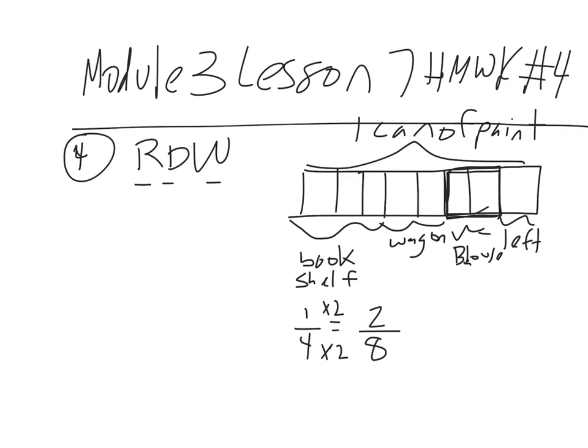So if the can of paint is one whole, we'll change that to eight-eighths. The whole is eight-eighths. So you're going to take away all these eighths now. So you're going to minus the three-eighths for the bookshelf. You're going to minus the two-eighths for the wagon. You're going to minus the one-eighth that you have left.